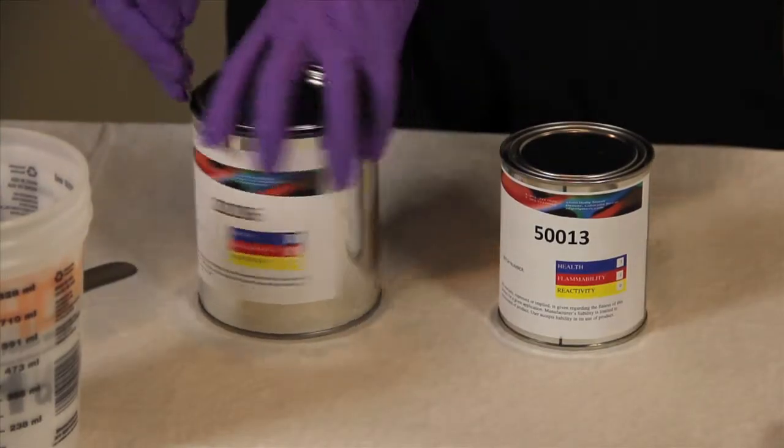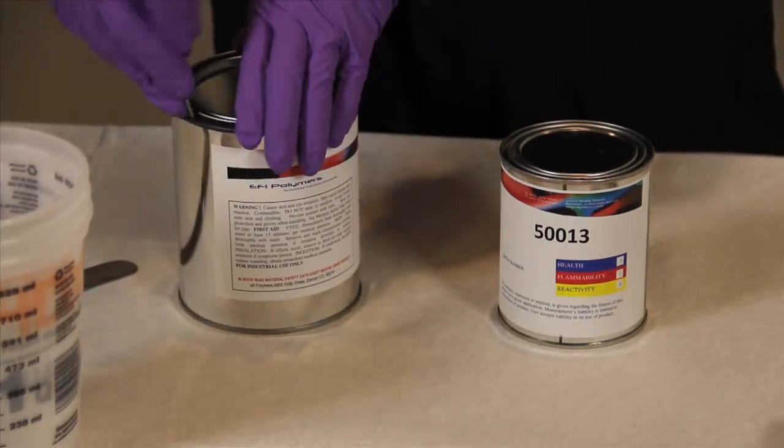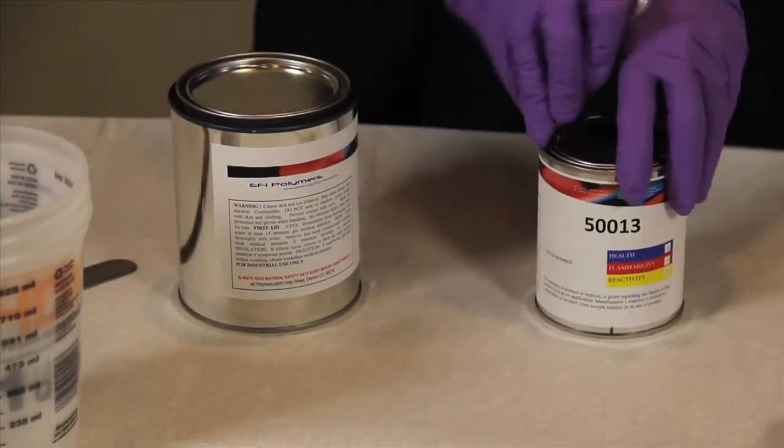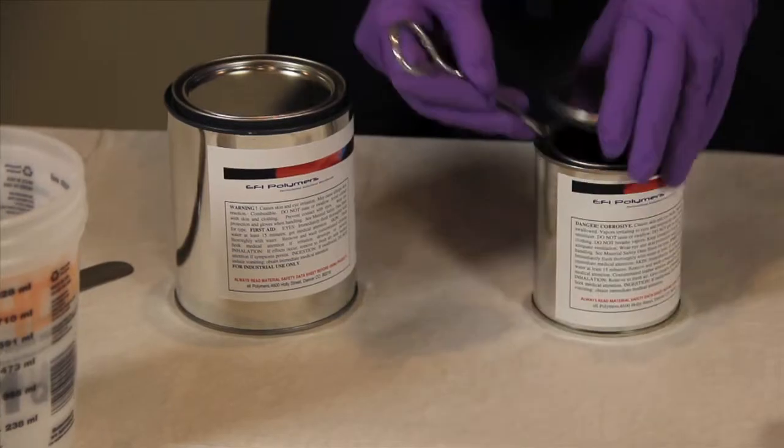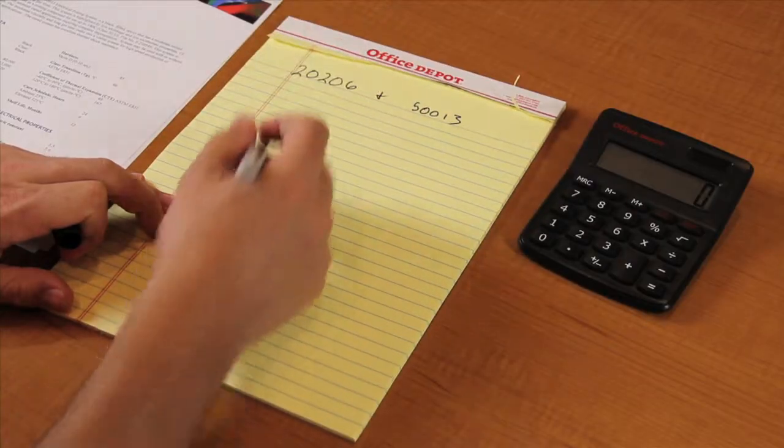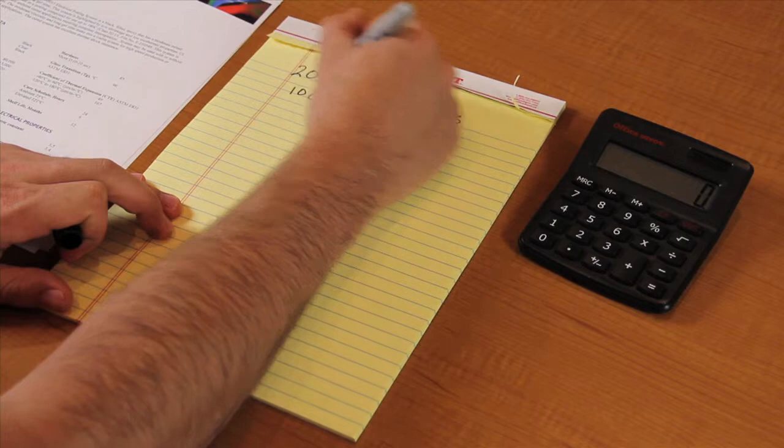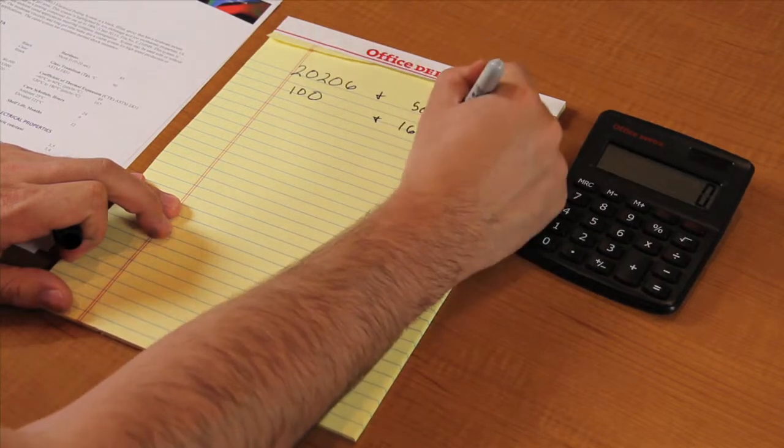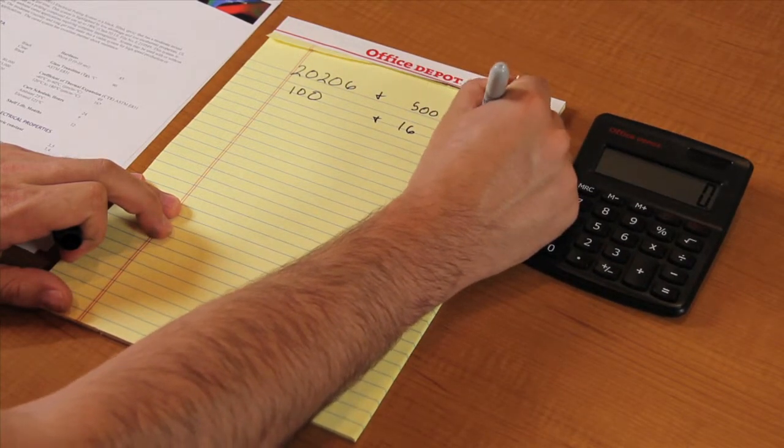You'll want to estimate the amount of material you'll need to fill your part. Make sure to include a little excess material to account for spillage and waste left in your cup. This material mixes at a ratio of 100 parts of 20206 and 16 parts of 50013.